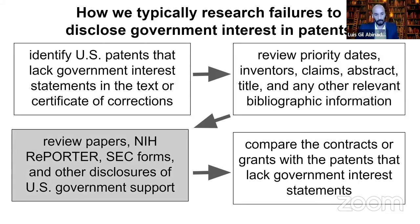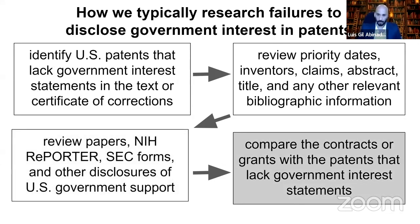Then we go out and look in the academic literature for papers related to the technology that was patented. We also look into the NIH Reporter, and in cases where the company is publicly traded, we look into SEC forms — basically everything that will give us information about the role of the U.S. government around a particular technology. We then compare the patents and the evidence of government support, and if we see a correlation, we think we have a failure to disclose.